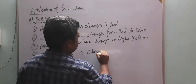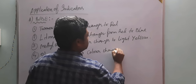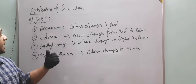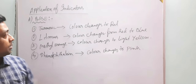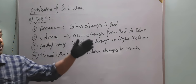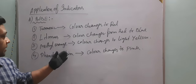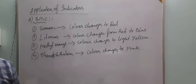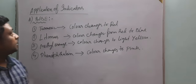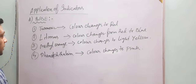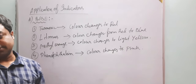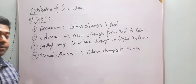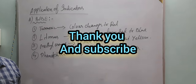Phenolphthalein color changes to pink when base is added. To summarize for base: turmeric changes to red, litmus changes from red to blue, methyl orange changes to light yellow, and phenolphthalein changes to pink. This is all about the application of indicators and how we can use different types of indicators to determine whether a given substance is an acid or base. Next we are going to discuss the acid and base section in more detail.